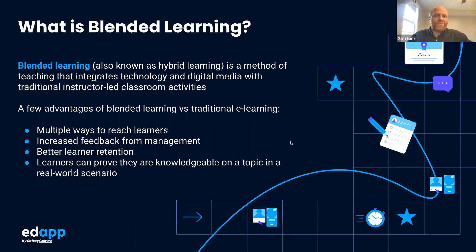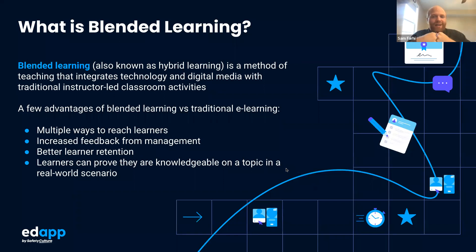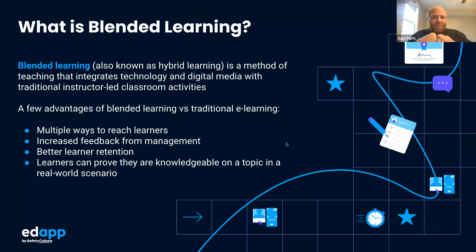Learners can also prove they're knowledgeable in a real-world scenario. Studies show 70% of learning happens while on the job — not in training. It happens in the field: next to a coworker, getting advice from management, figuring things out on your own. What EdApp can do is measure and acknowledge that learning as well, through practical assessments, group trainings, and discussions — going beyond just the micro lesson.